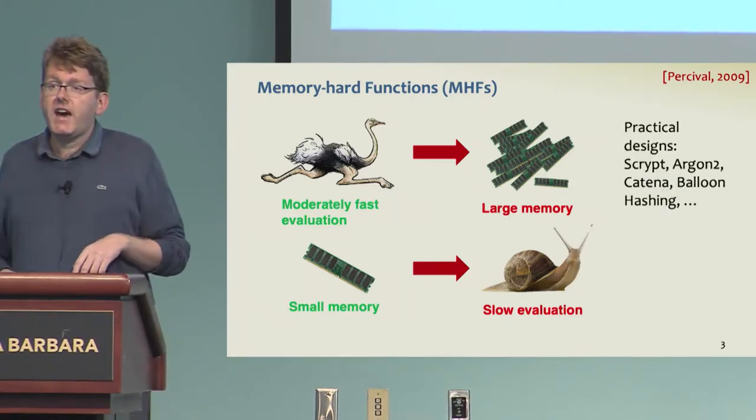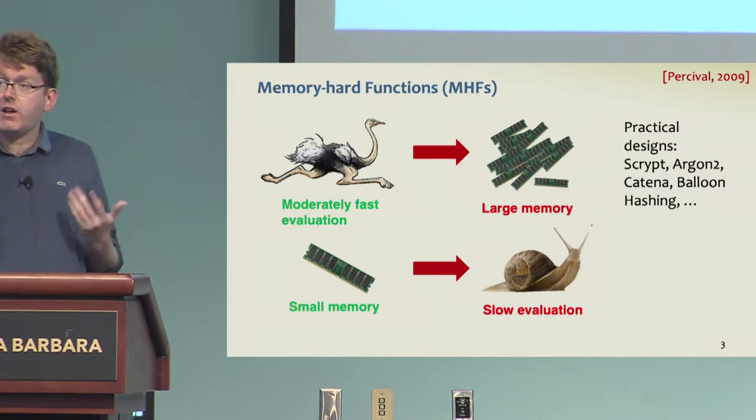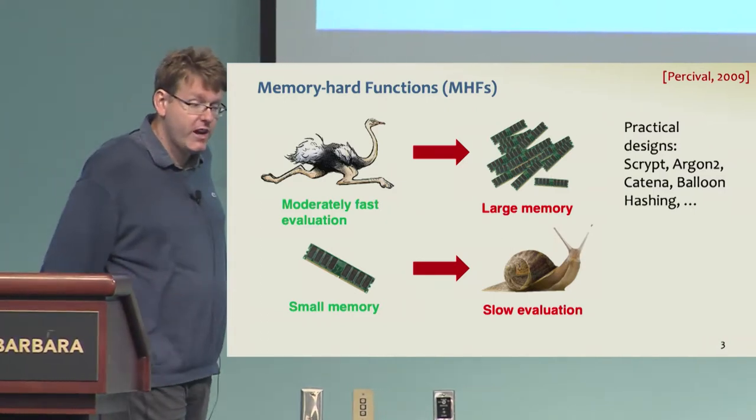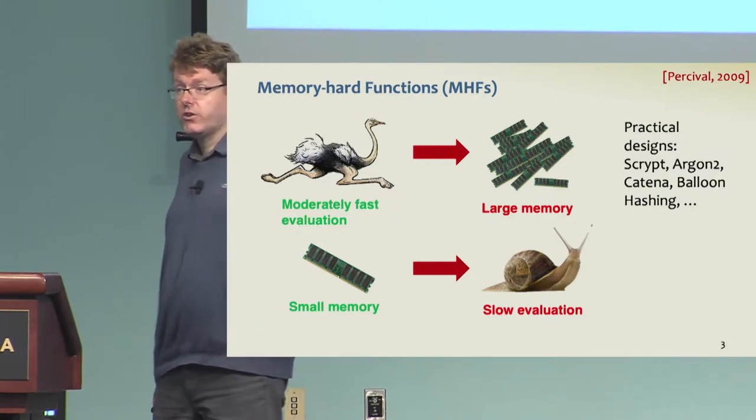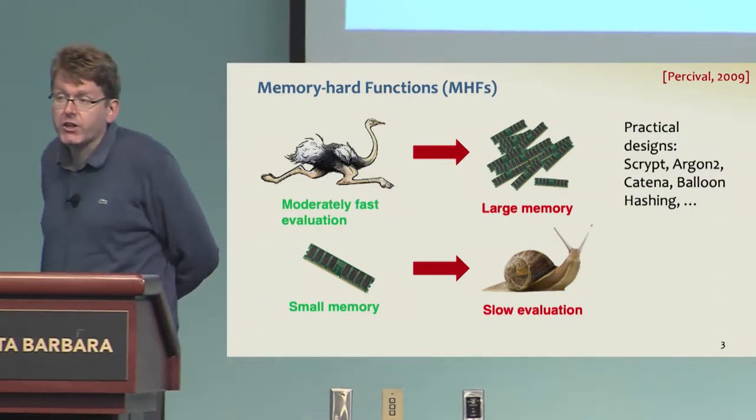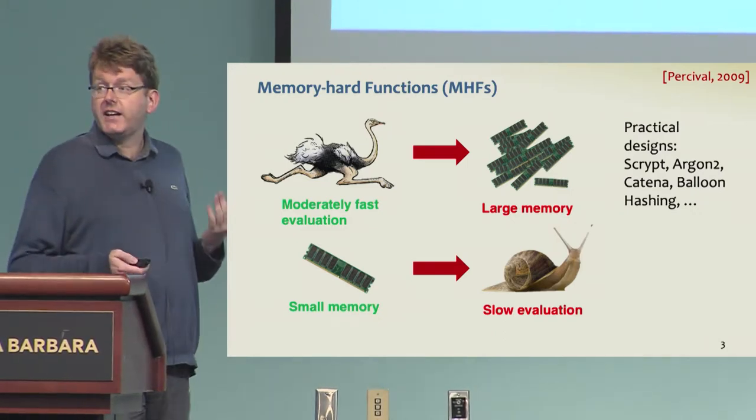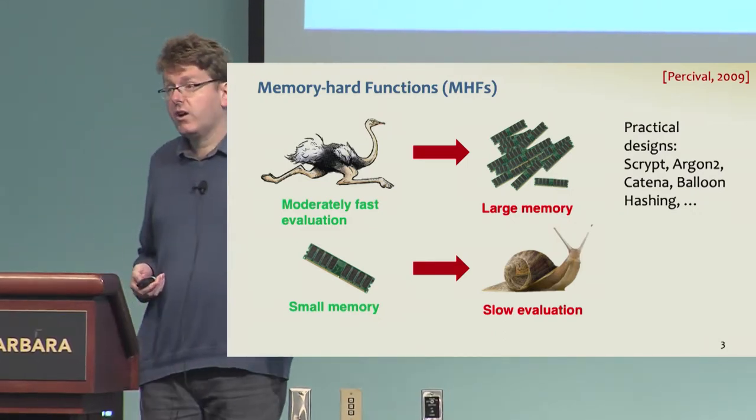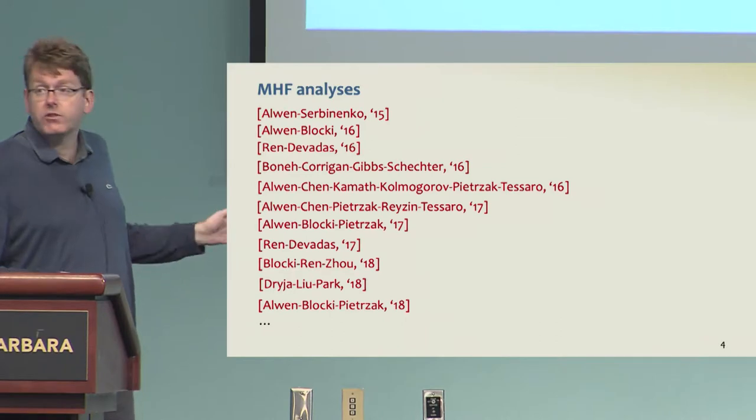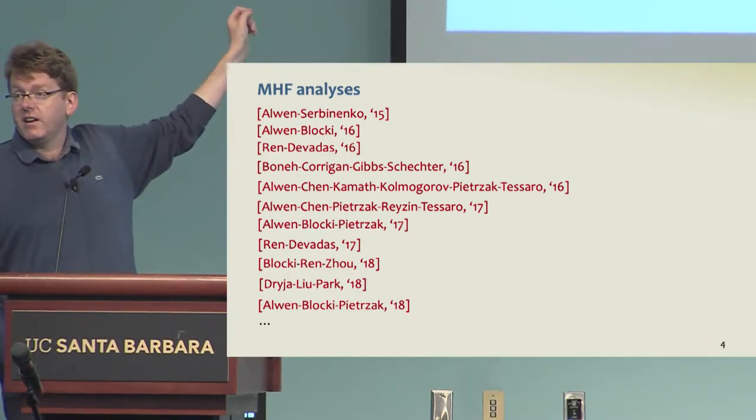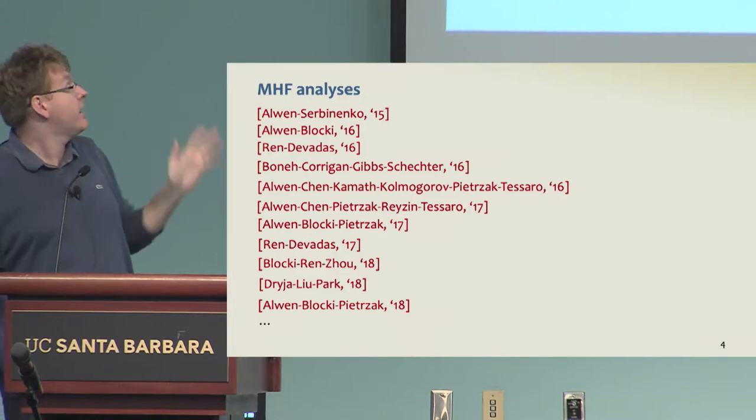The goal of memory hardness was present in a number of practical designs for password hashing, including Scrypt and Argon2, the winner of the password hashing competition. There was a substantial effort on the theoretical end to validate the memory hardness of these designs, which has led to a large number of papers over the last few years.